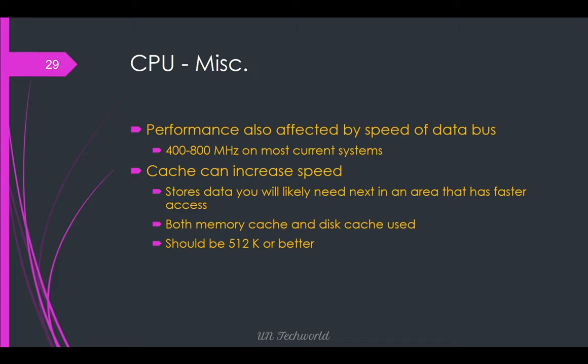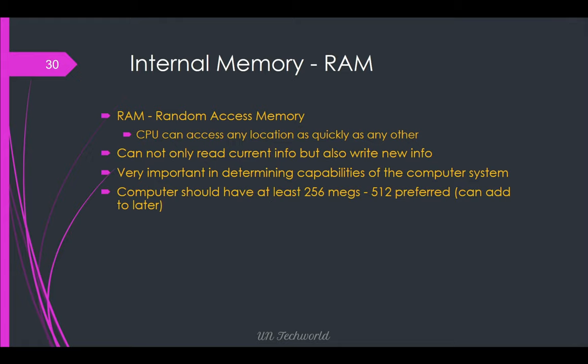Both memory cache and disk cache are used. Cache should be 512 kilobytes or better. Internal memory — RAM, or Random Access Memory — can be accessed at any location as quickly as any other. It can not only read current info but also write new info, and is very important in determining the capabilities of the computer system. A computer should have at least 256 MB or 512 MB. Nowadays we are using a minimum of 4 GB, and the maximum depends on the available motherboard slots.